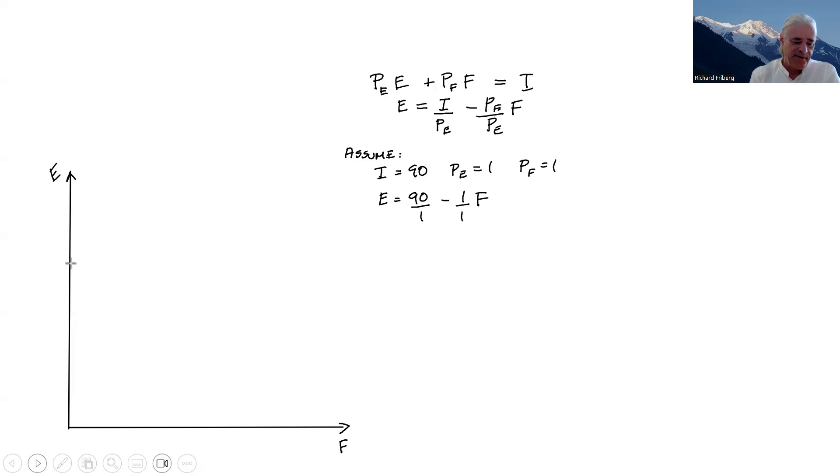If she only buys entertainment, she can buy 90 units given that each costs 1. But the more F that she wants to buy, the less E can she afford. And in the book, we show that you'll get a particular case of indifference curve or utility function, which would give the optimal quantity 45 for each. This is not important. The important point is that the combination of utility function and a budget constraint gives a set of optimal quantities. These are not just some quantity in general - that's a very specific quantity.